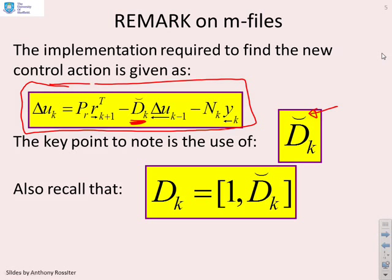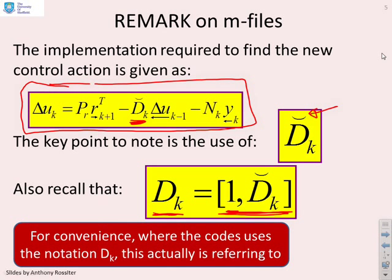And you'll see we've put this little symbol on the top to distinguish between that and the actual control denominator. And the link between the control denominator D_k and this thing is basically a 1, D_k check. Now, why is this important? Because when you look at the MATLAB code, rather than carrying around this extra symbol, because the code only ever needs this value, we just call it D_k for convenience. But you must remember not to get mixed up.